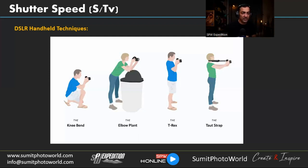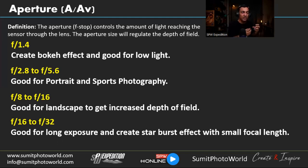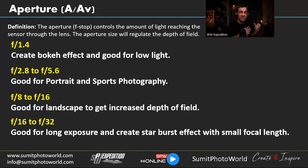Now let's talk about aperture. Aperture (f-stop) controls the amount of light reaching the sensor through the lens — sometimes called the 'eye of the lens.' The aperture size regulates depth of field. A low aperture like f/1.4 or f/1.8 creates a bokeh effect — where background lights appear as round circles — and is good for low light. F/2.2 to f/5.6 is good for portrait and sports photography, providing enough depth of field to capture the whole subject.